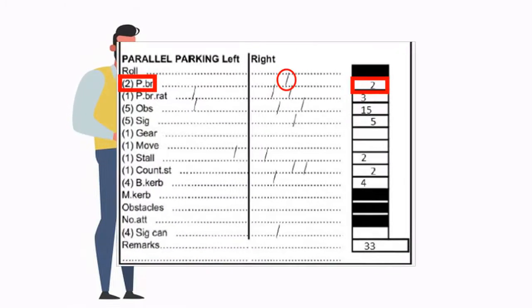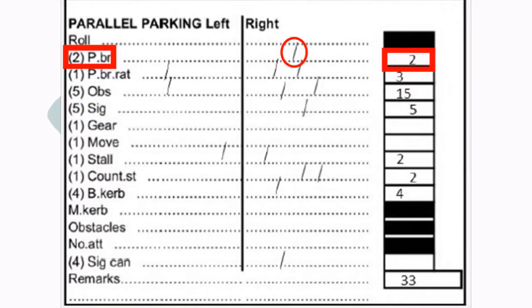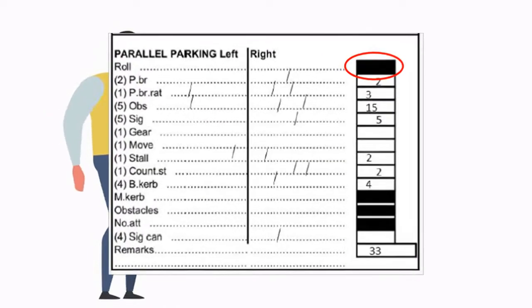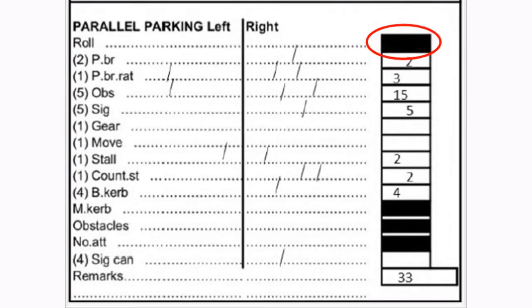First, the student got two points scored for not applying the park brake when needed when parallel parking to the right. It is very important to apply park brake. If not, you can cause the car to roll, then the examiner will draw a circle around the black rectangle indicating a fail, and the test will be stopped.